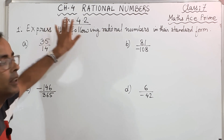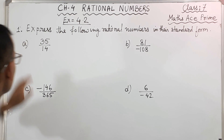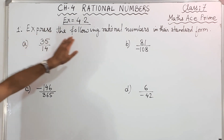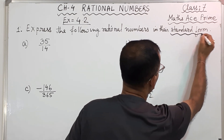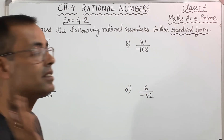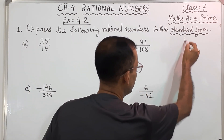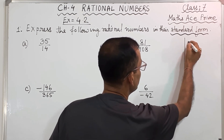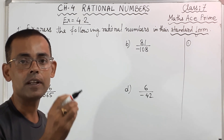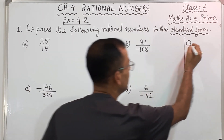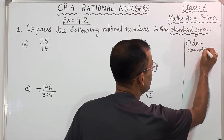Now let us see in Question 1 what they are telling in Exercise 4.2. They are telling: express the following rational numbers in their standard form. Now you have to understand what is this standard form. Two things you have to remember. First, number 1: the denominator — rational number means in which style? P by Q. The denominator cannot be negative.